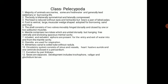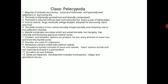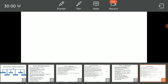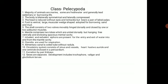The next class is Pelecypoda. The majority of the animals are marine, some are present in freshwater, and they generally lead a sedentary or burrowing life. The body is bilaterally symmetrical and laterally compressed. The head is reduced, without eyes and tentacles, but bears a pair of labial palps.